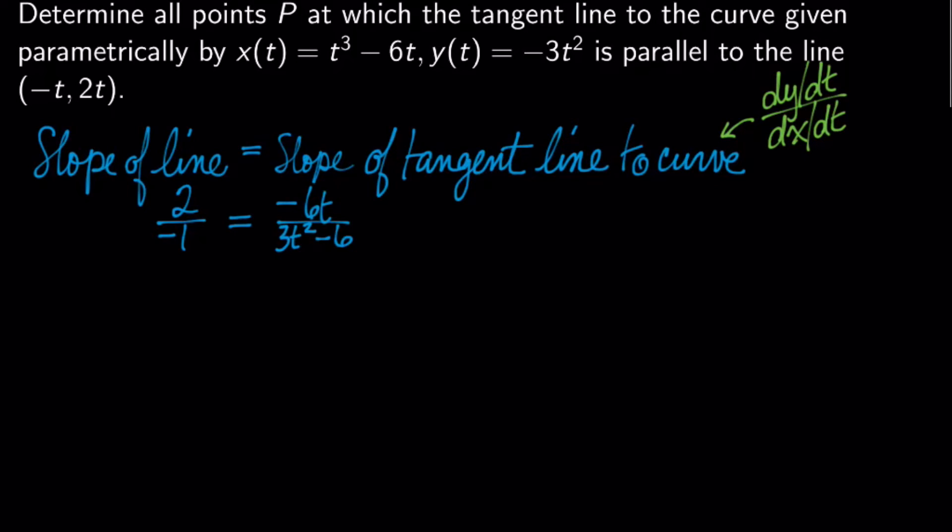It's also easy to do the derivative on the right-hand side. So, dy/dt is equal to negative 6t. No problems there. And dx/dt is 3t squared minus 6. I've got an equation to solve. That's super exciting.